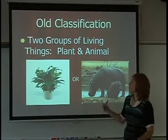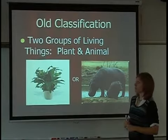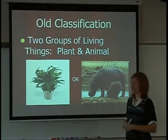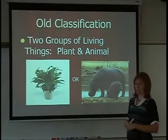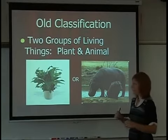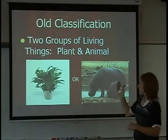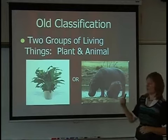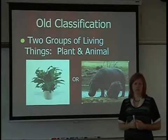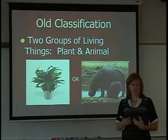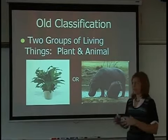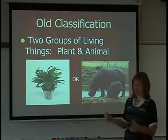The old classification system is an example of how the system has changed. They used to just have two groups that everything went into — it was either a plant or an animal. As scientists have learned more and discovered more diverse species, this has expanded.